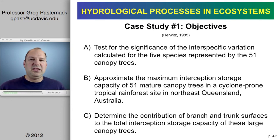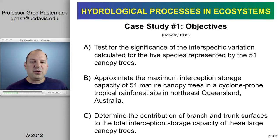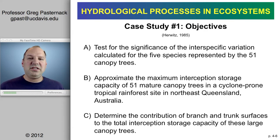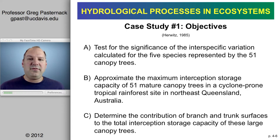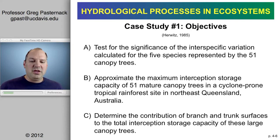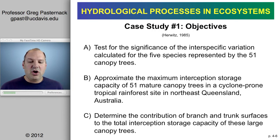I'm going to present two case studies, and we can move through relatively quickly. Both are by Hurwitz. The first was done in 1985, and the second is a follow-up the following year. The objectives of the first study were: first, to test for the significance of interspecific variation — differences between species — looking at five different species represented by 51 canopy trees; second, to approximate the maximum interception storage capacity for those 51 mature canopy trees; and third, to determine the contribution of branch and trunk surfaces — the woody surfaces — to total interception storage capacity.